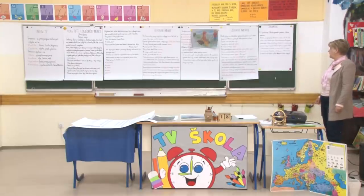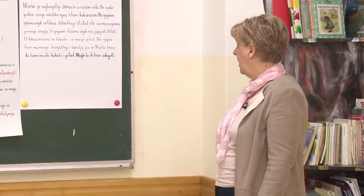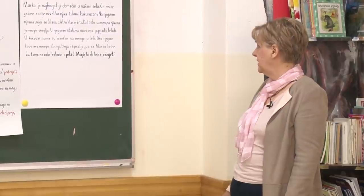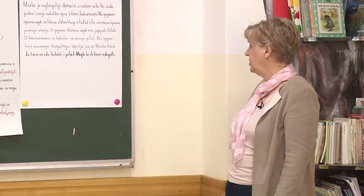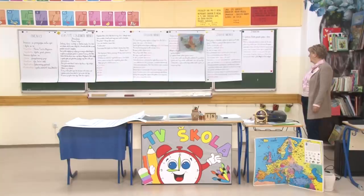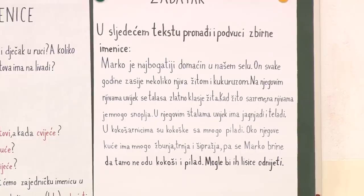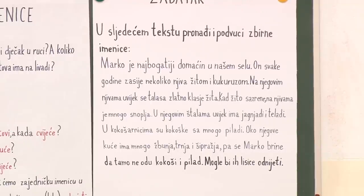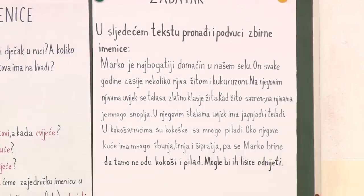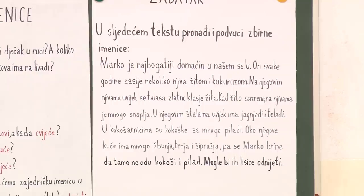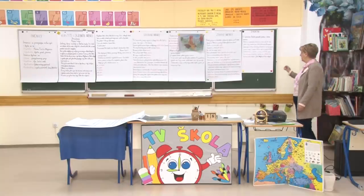Imenice koje označavaju nebrojiv zbir predmeta ili bića nazivaju se zbirne imenice. Zbirne imenice su, na primjer: granje, kamenje, telad, perje, grožđe, djeca, drveće - sve ono što ne možemo prebrojati. U jednom momentu je ona zajednička, brojiva, a u drugom je zbirna jer ih ima puno i ne možemo ih prebrojati. Zadatak: U sljedećem tekstu pronađi i podvuci zbirne imenice.